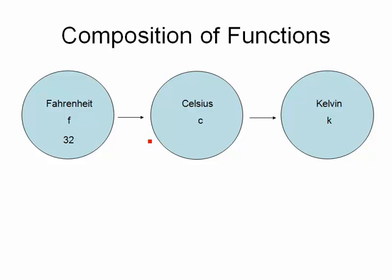For instance, what about the freezing point of water, 32? In Celsius, that's 0 degrees, and in Kelvin, that's 273 degrees. You may understand one or more of these connections, but what you may not realize is there are actually some functions that take you from Fahrenheit to Celsius to Kelvin.